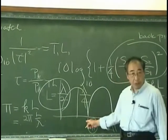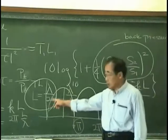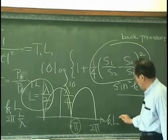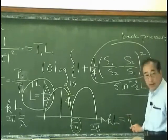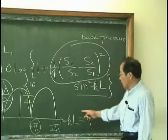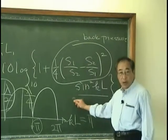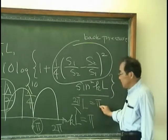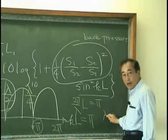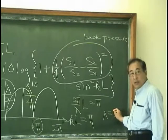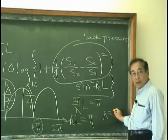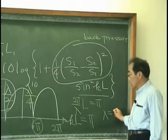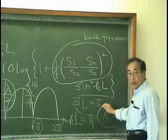This point is pi. At pi, there is no transmission loss. But pi means kL is equal to pi. And we know k is 2π over lambda. That means lambda has to be 2L.